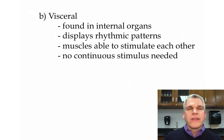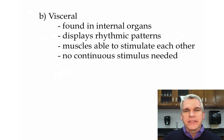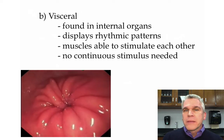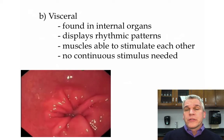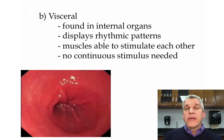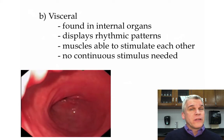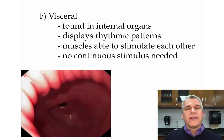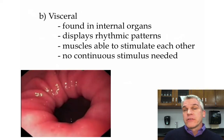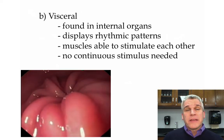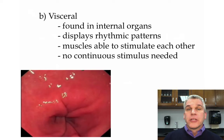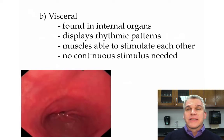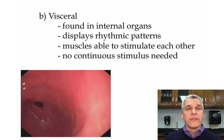The other type is called visceral smooth muscle. We find these in hollow internal organs, like your stomach and intestines, and they tend to display more rhythmic patterns in their contractions. Unlike skeletal muscle, visceral smooth muscles are able to stimulate one another, so when one area contracts but another part of the organ is relaxed, that wave of impulses will go to the new area and cause it to contract. You don't constantly need a nerve impulse going to that organ to have those smooth muscles contract — it'll just continuously contract as it moves down the organ.